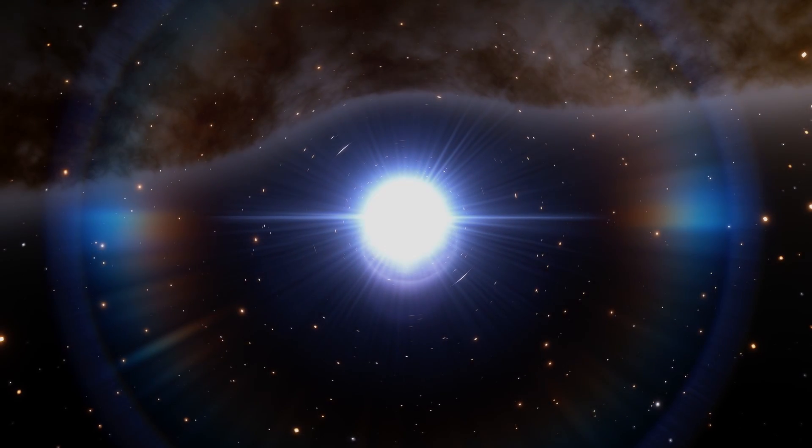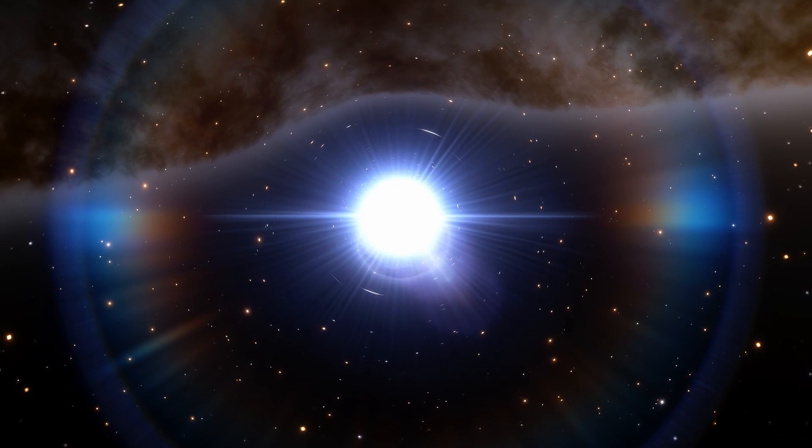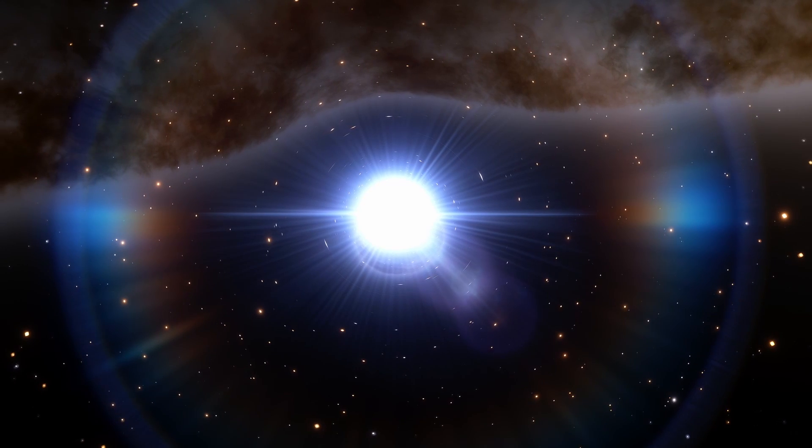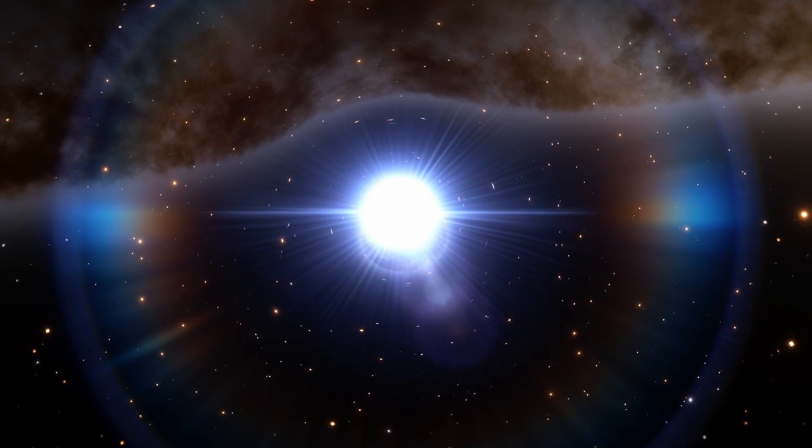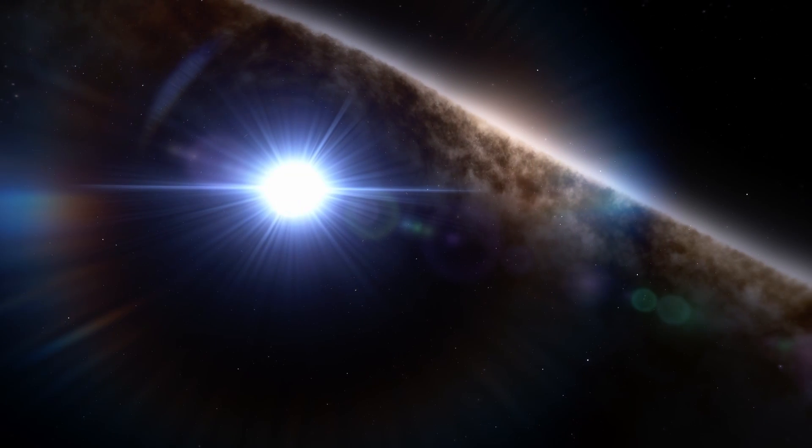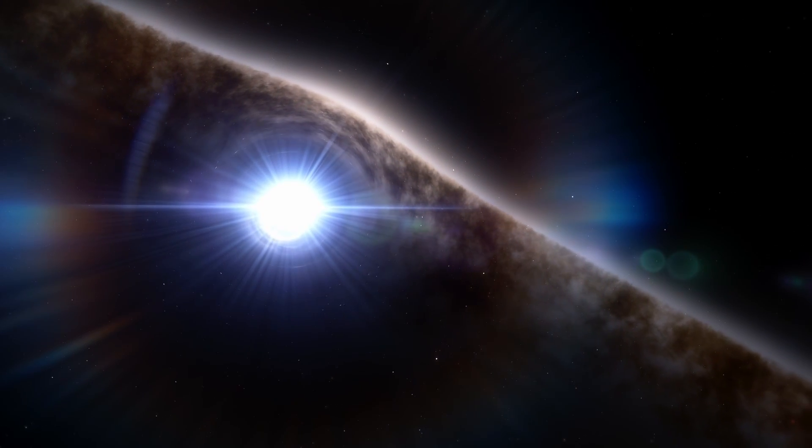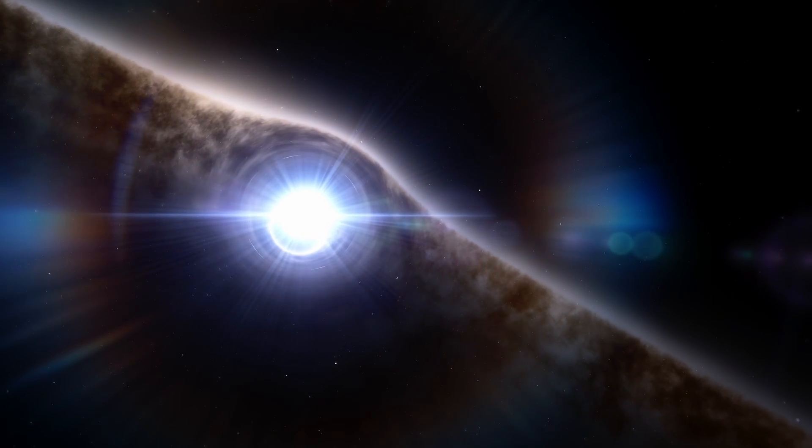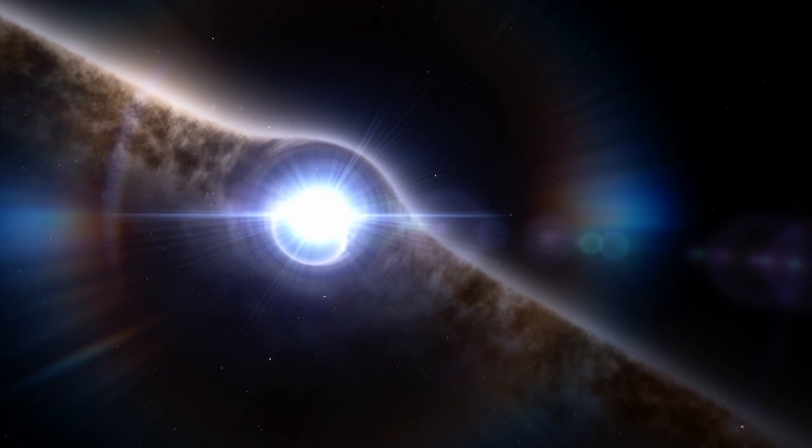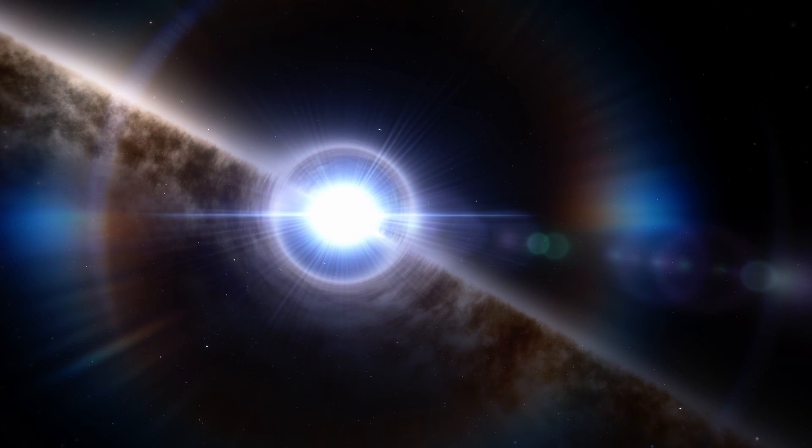This neutron star weighs in around 1.4 solar masses, but has a diameter of only 10 kilometers. The gravitational forces are so strong that it warps time itself. One hour on the surface of this star would be 1 hour 15 minutes on earth, meaning time moves more slowly here.